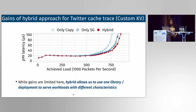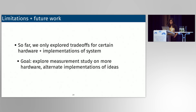Looking at the gain of the hybrid approach against only scatter-gather for the Twitter cache trace, the gains are about 2% to 3% at 50 microseconds. Cornflakes being hybrid can serve both traces that have predominantly small values, where it falls back to baseline performance, as well as traces with predominantly large values, where zero copy will have a huge benefit. There are more results in the paper on other traces as well.